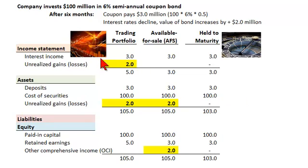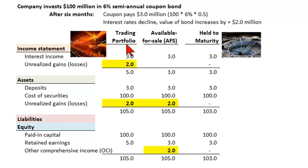Hi, this is David Harper of the Bionic Turtle, continuing with a review of the CFA. Today I focus on the three classifications for marketable securities: trading portfolio, available for sale, and held to maturity.